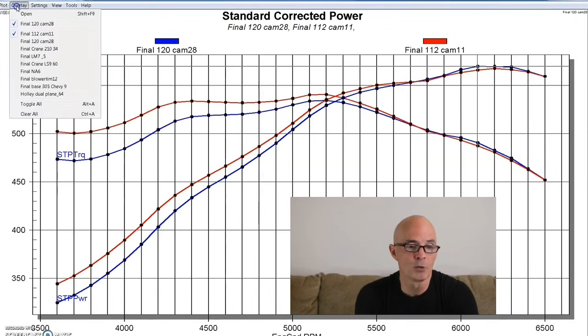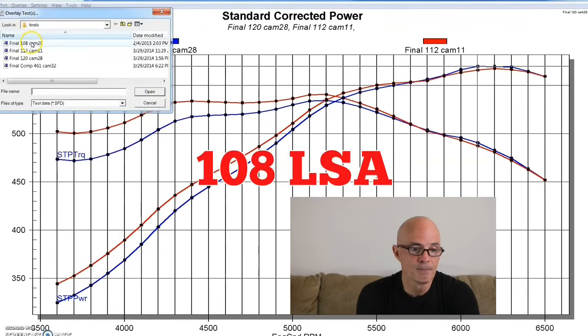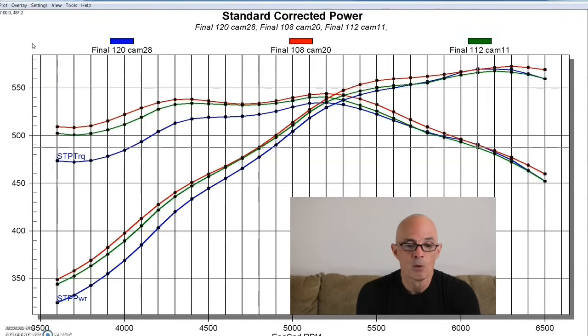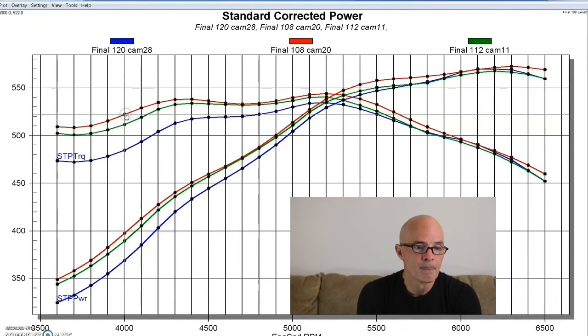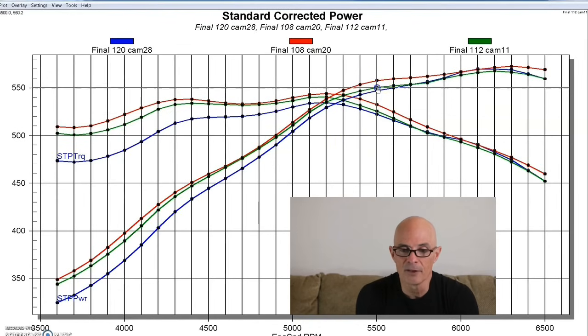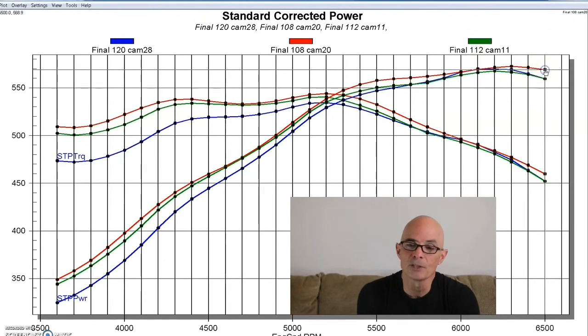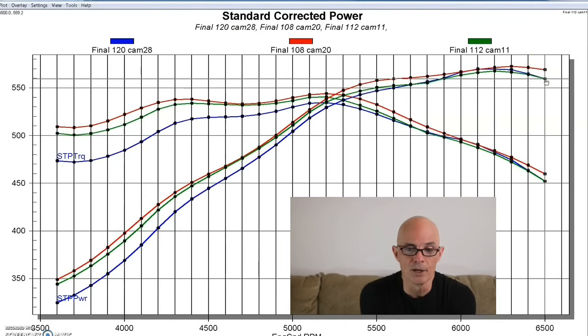So here's what happened when we went from the 112 to the 108. Tightened it up quite a bit. Again, no change in lift and duration. 108 LSA. We got another improvement in low speed torque, which we kind of would expect. We picked up another 11 foot pounds of torque there. But the interesting thing is that we picked up power through most of the curve. I mean, here in the 5500 RPM range, we picked up, 550 to 557, so seven or eight foot pounds. And even a little bit out at the very top, which I found was interesting based on the change from 120 to 108. I kind of expected there to be a loss at the top.